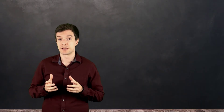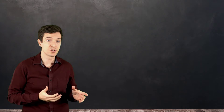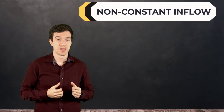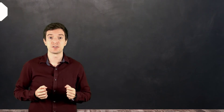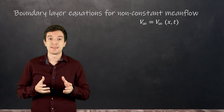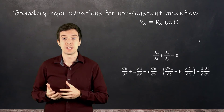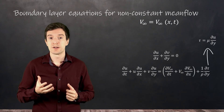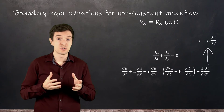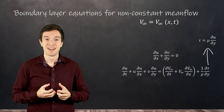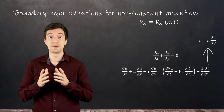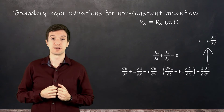We can extend the range of applicability of the boundary layer equations to cases with non-constant mean flow, meaning that the free stream velocity can vary with x and time. We can then recast the equations into a form where the terms in brackets take into account the pressure gradient. This expression of the boundary layer is valid for both laminar and turbulent boundary layers.